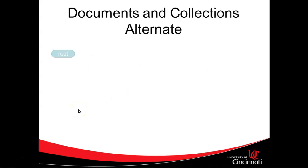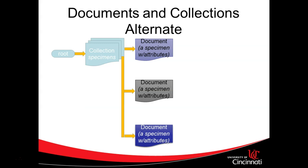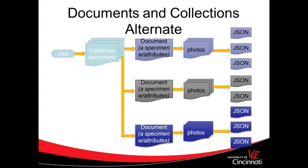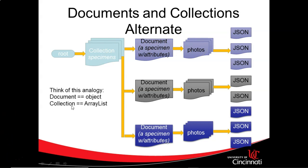A quick look at Cloud Firestore: it's interesting because we start with a root, and from that root we have a collection. That collection is a series of JSON documents essentially, and they can have further collections, which can have further JSON documents, and so on. So it's an alternating concept where a JSON document can have attributes, but it can also own a collection of other documents. Think of a document as an object, or a collection as an array list.